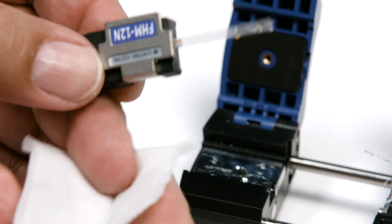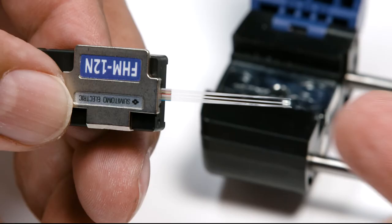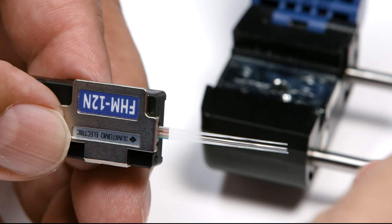Moisten a lint-free cloth with glass fiber cleaner. Use the moistened lint-free cloth to remove buffer residue, exposing a clean cladding layer.